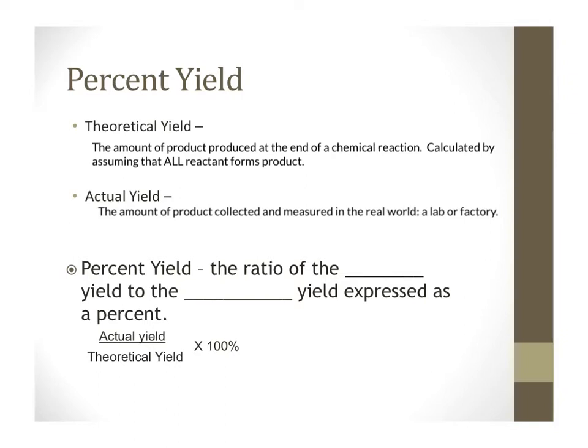Once you have identified the theoretical and actual yield in your problem, the percent yield is the ratio of the actual yield to the theoretical yield expressed as a percent. So it's how much you actually get divided by your theoretical yield times 100%. You can really think about it the same way you would calculate a grade on a test. The actual points that you got divided by the total number of points that would be possible if you got a perfect score on the test. That's how you would calculate your test percentage. It's also how you would calculate the percent yield for a process.